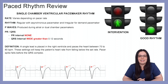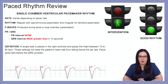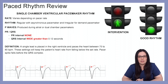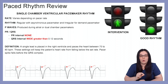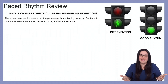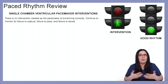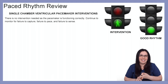A single lead is placed in the right ventricle and paces the heart between 70 to 80 beats per minute. These settings will keep the patient's heart rate from falling below that set rate, and pacer spikes fall before the QRS complex. Interventions are not necessary with the single chamber ventricular pacemaker as long as it is functioning correctly, and again we want to continue to monitor for failure to capture, failure to pace, and failure to sense.